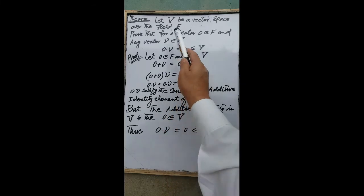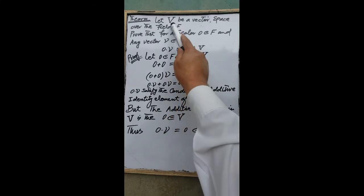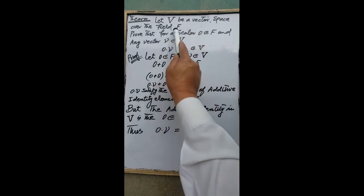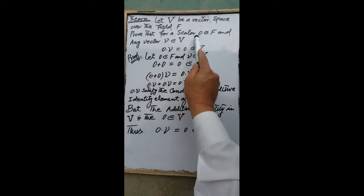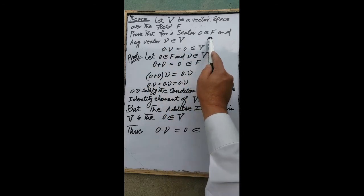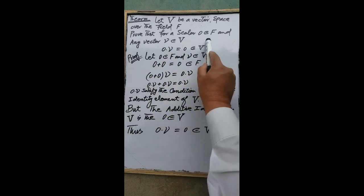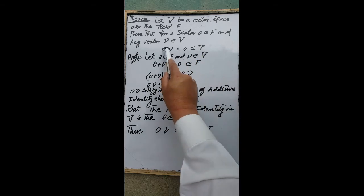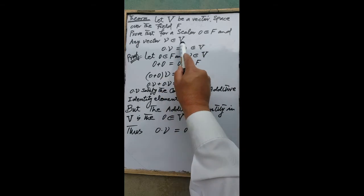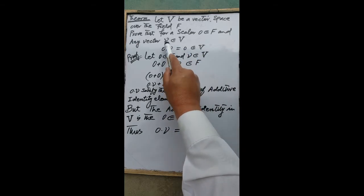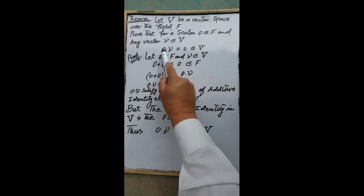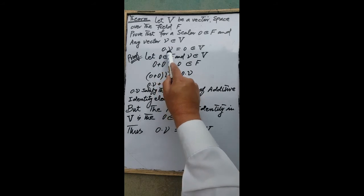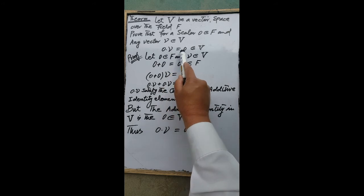Our next theorem: let V be a vector space over the field F. Prove that for any scalar 0 in the field F and any vector v belonging to the vector space V, the scalar multiplication of the zero scalar with the vector v gives the zero vector.